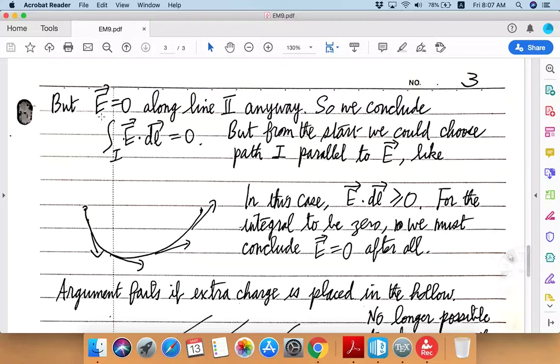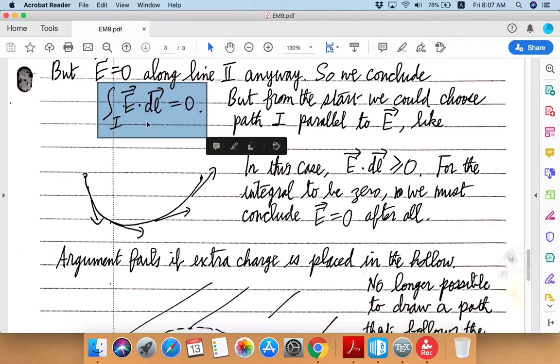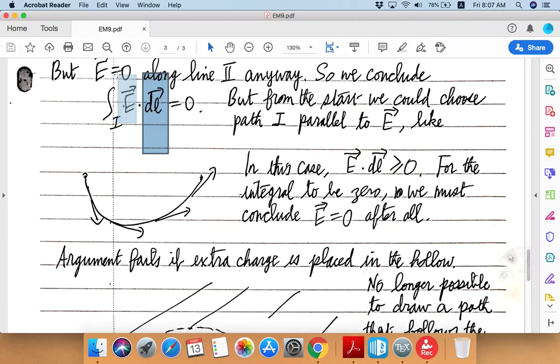Okay, so that's the logical conclusion. However, remember that we chose this path from the beginning to exactly follow the electric field line, which means that this dℓ vector is always parallel to the E vector no matter where you are on this path.